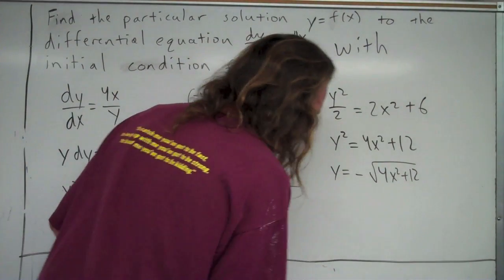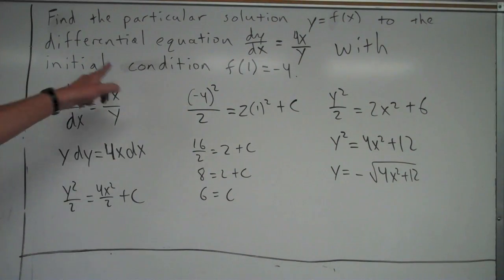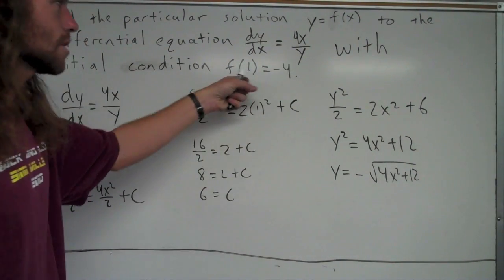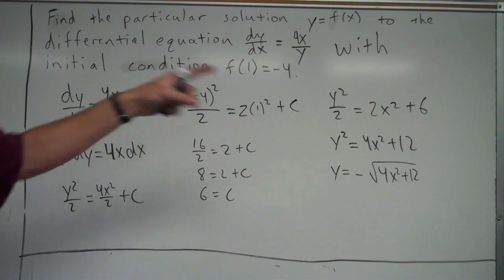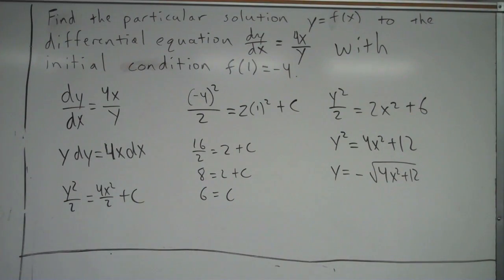And that's actually always a good thing to check, is once you get your final answer, always just check. Plug your initial condition in. Plug 1 in for x. Plug negative 4 in for y. Does it end up equaling each other like it should? That's always a good way to check if you've done things correctly.